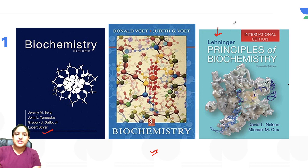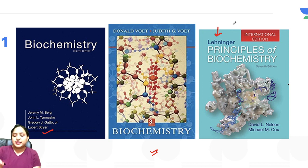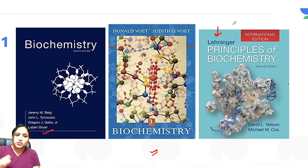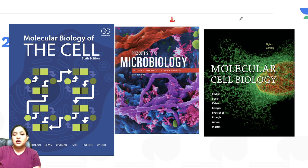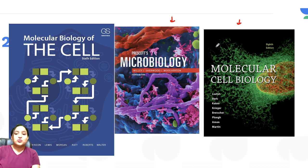All of these biochemistry books are brilliant. It completely depends on your perception of how you grasp knowledge from a book, because every individual has a different perspective. Whatever you like, pick a topic and try to read it from one book. Some books simplify topics, while others give you a lot of knowledge along with simplification. Set your priorities and act accordingly. For Unit 2, cellular organization, refer to Molecular Biology of the Cell by Bruce Alberts, Prescott's Microbiology, and Molecular Biology by Lodish.